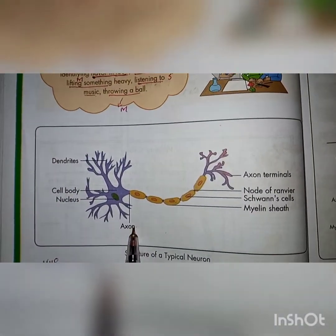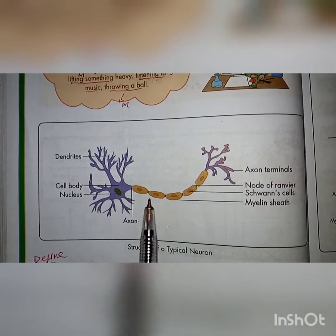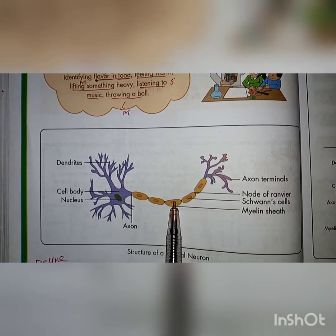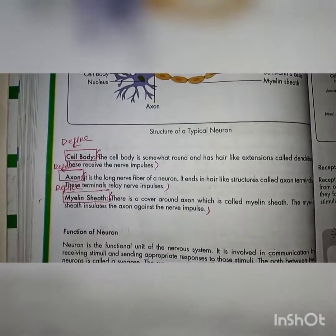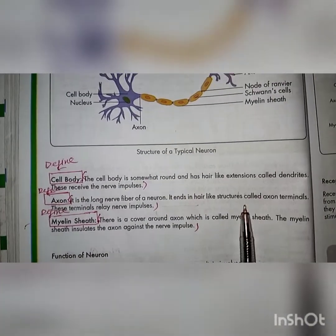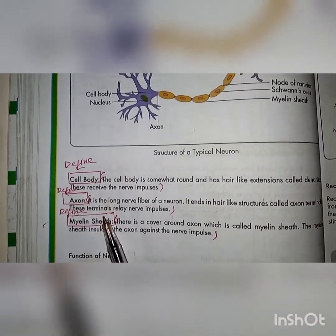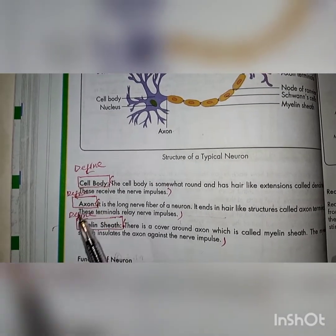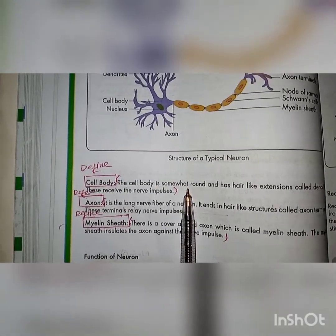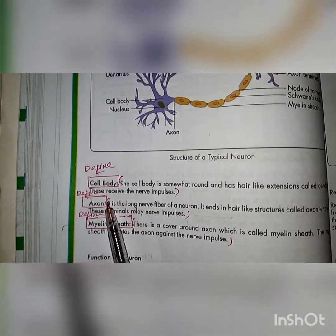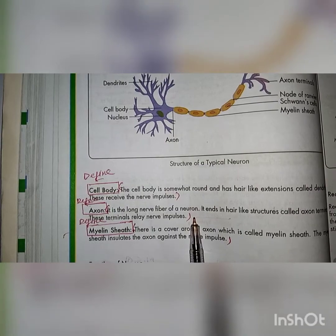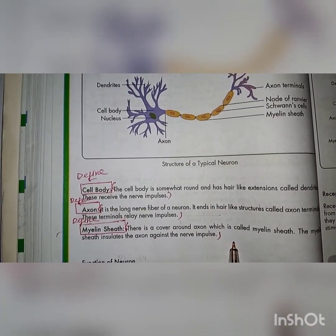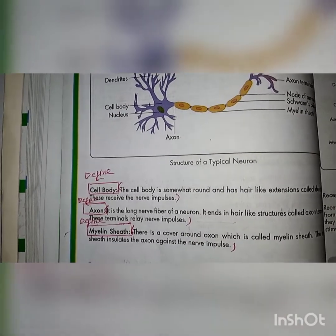We will now talk about the typical structure of a neuron — this diagram shows the typical structure of a neuron. We also covered definitions of the cell body, the axon, and the myelin sheath. This is all about today's lecture.